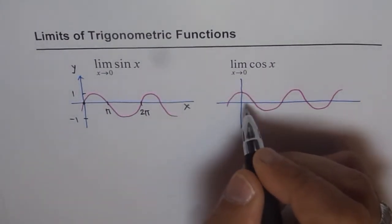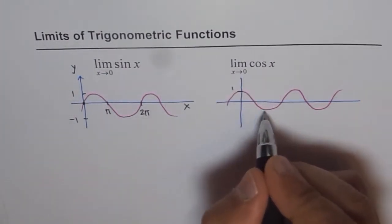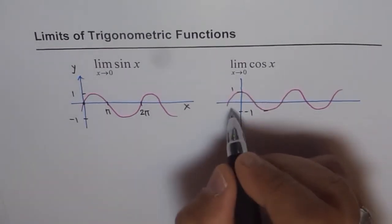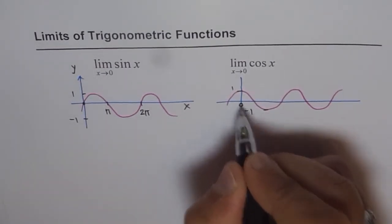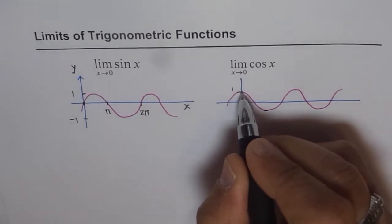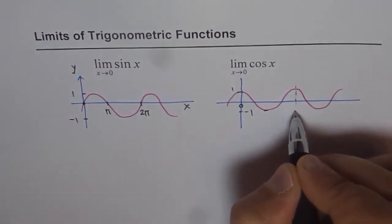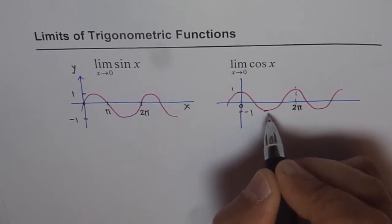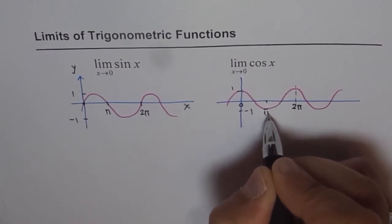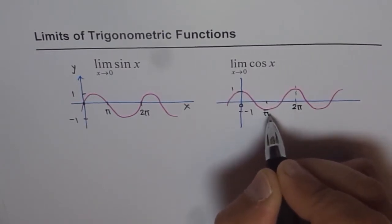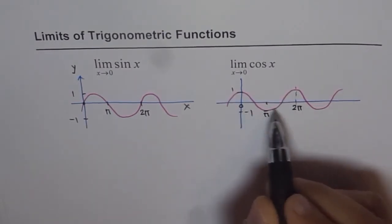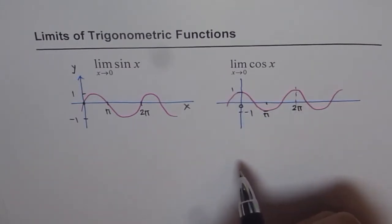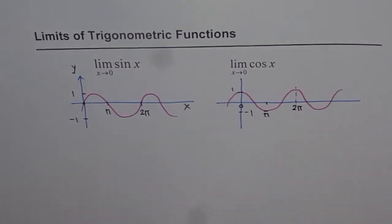For cosine, similarly, the maximum is 1 and the minimum is minus 1. The time period is 2 pi. Starting from 0, we start from a maximum and complete the cycle back at the maximum at 2 pi. At 0, pi, and 2 pi, the cosine function has its extreme values. So this is how both functions behave.